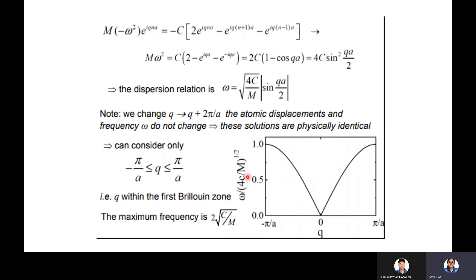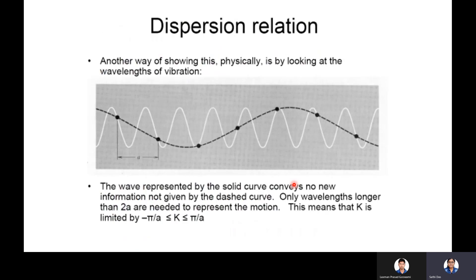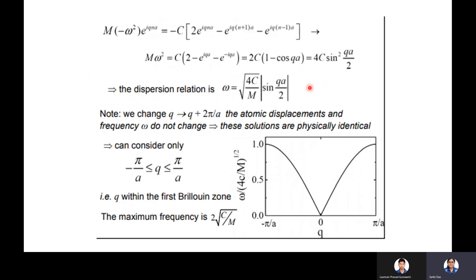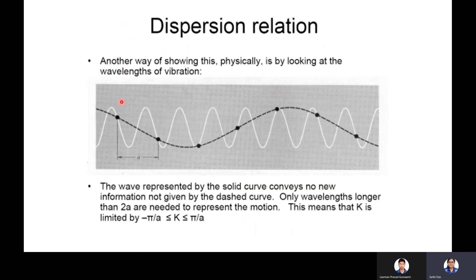Plotting ω/√(4C/M) versus q gives a characteristic curve. The dispersion relation shows that a wave represented by the solid curve conveys no new information compared to the dashed curve. For wavelengths longer than 2a, that motion is represented, meaning the wave vector k is limited to the range −π/a to +π/a.